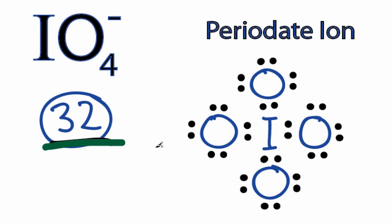The thing is that iodine can hold more than 8 valence electrons, so we really want to check the formal charges on iodine to make sure that this is the most likely structure for the IO4- ion.